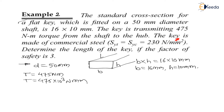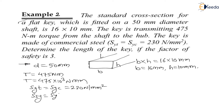The key is made of commercial steel where Syt equals Syc equals 230 N/mm². The tensile yield strength equals the compressive yield strength equals 230 N/mm². Therefore the shear yield strength Ssy equals 230/2 equals 115 N/mm².